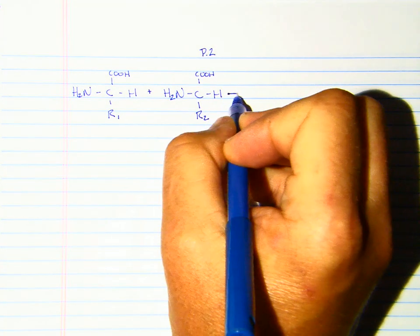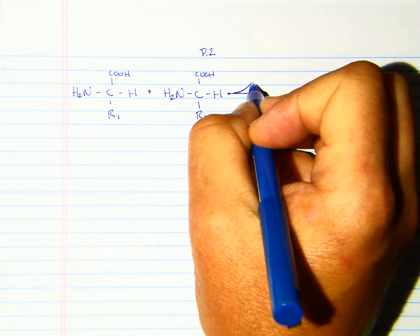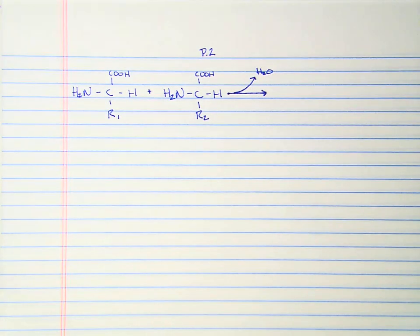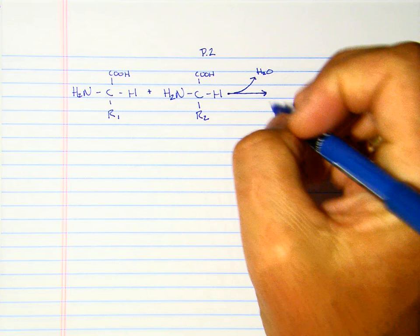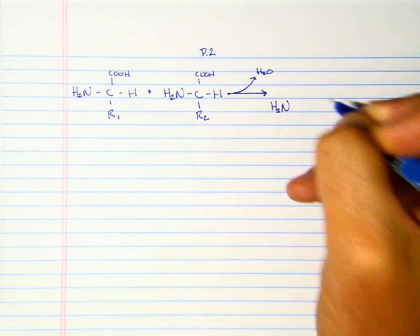To form a dipeptide or a peptide bond, we're going to remove water. When we're talking about the digestion of proteins, we're adding water. It's a hydrolysis reaction, just like the reaction to break glucose molecules out of cellulose or starch. This is the opposite. We're synthesizing the molecule. Now we're forming a dipeptide.